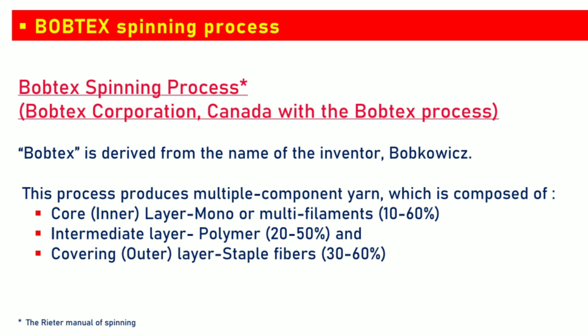Friends, let's understand the Bobtex spinning process. Bobtex is derived from the name of the inventor Bobcoviz. This process produces a multi-component yarn which is composed of an inner layer, intermediate layer, and covering layer. The core inner layer is of mono or multi-filaments, the intermediate layer is of polymer, and the final outer covering layer is of staple fibers.